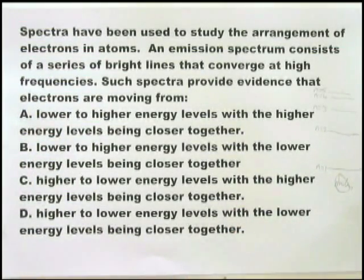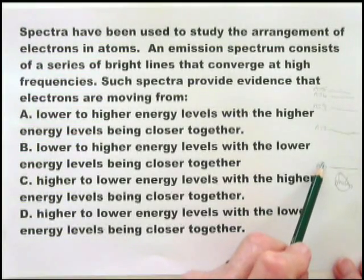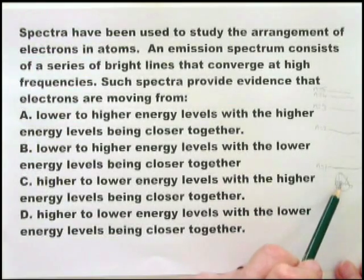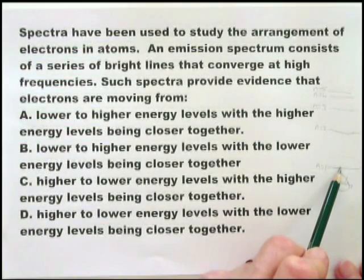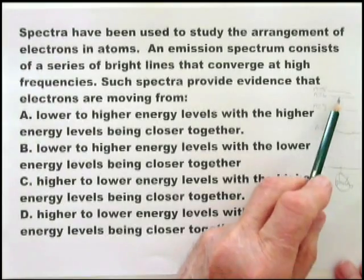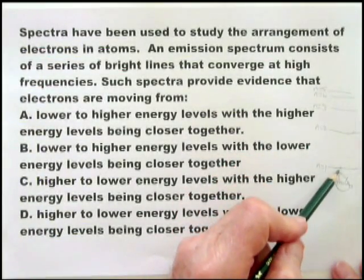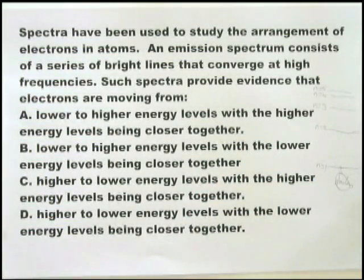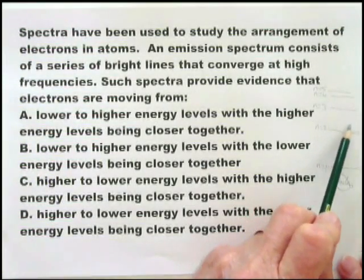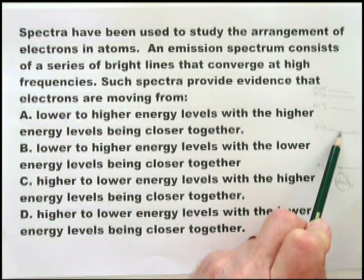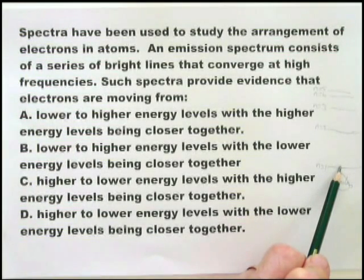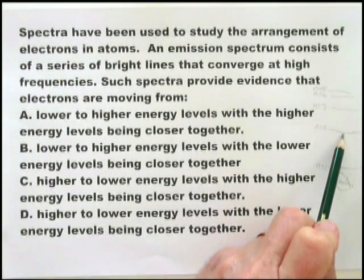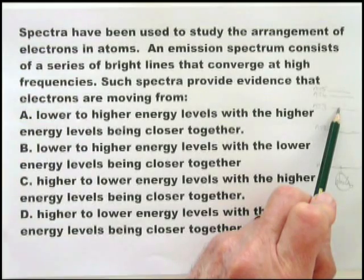Any transition involving N=1 involves a lot of energy, simply because it's close to the nucleus. An electron in N=1 requires much more energy to remove than one in N=2, 3, or 4. Similarly, if it falls down to N=1, it emits more energy than falling to N=2, 3, or 4. When electrons fall to N=2, they give off visible light. Falling to N=1 gives off ultraviolet light; falling to N=3 gives off infrared light.